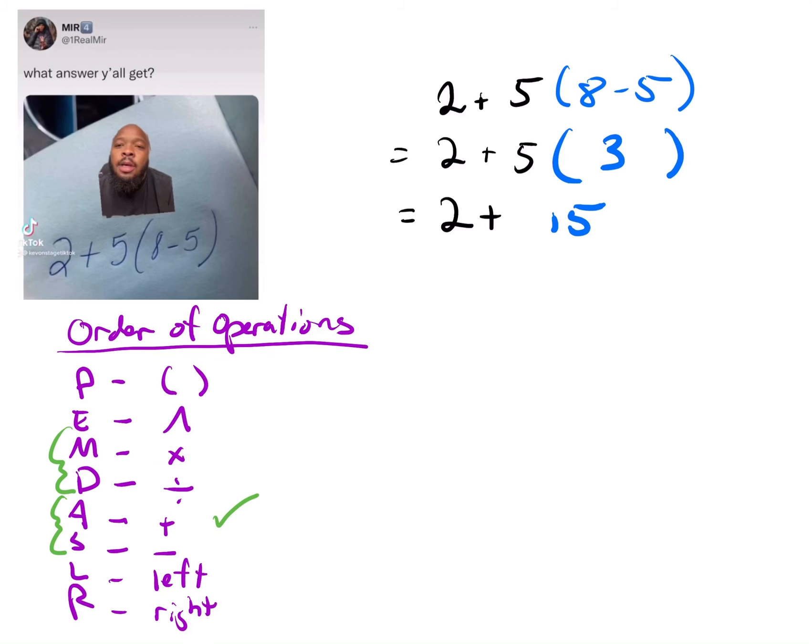So 5 times 3 is 15, and then we're just left with addition. 2 + 15 is 17, and that's where it comes from. Hopefully this made sense and this is able to help.